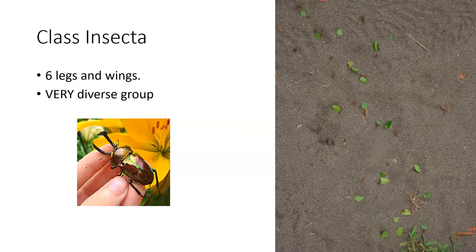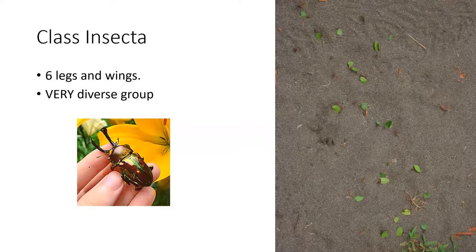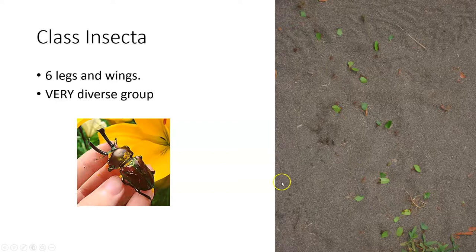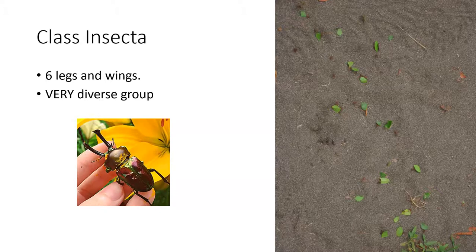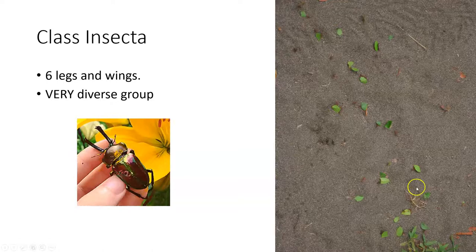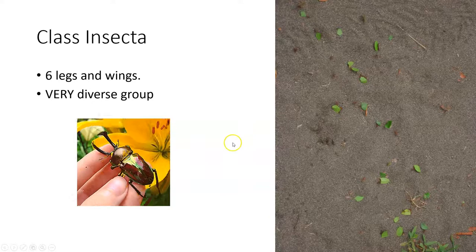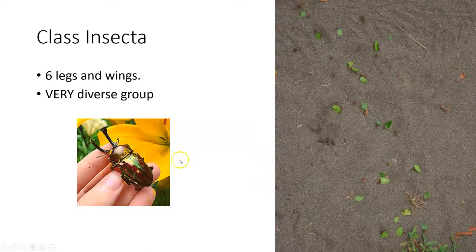Class Insecta: if you've been outside, you've seen these. Six legs and a pair of wings. It's an incredibly diverse group — from microscopic species to large ones like the blue morpho butterfly. Leaf-cutter ants, imported fire ants (an invasive species), and crazy ants that invade electrical equipment are just some examples. Beetles include ladybugs, golden beetles, and scarab beetles. There are also cockroaches, butterflies, moths, bees, and wasps — so many insects we can't cover them all, but they all have six legs and wings.